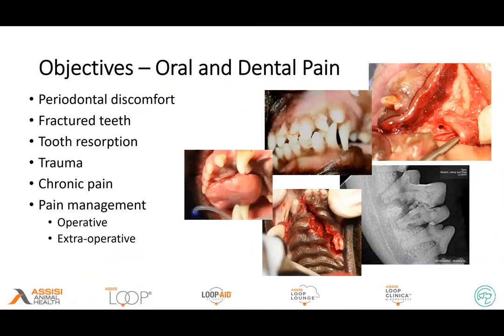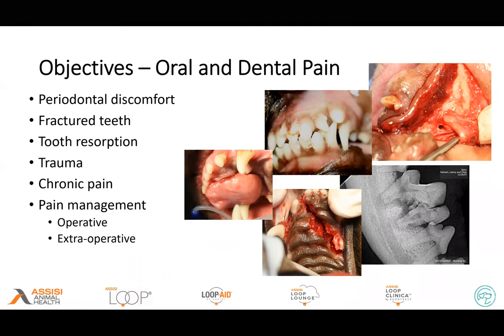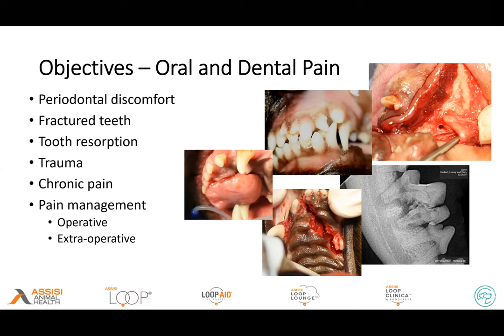As we look at oral and dental pain, there are certainly many areas where we can have pain and inflammation: periodontal disease, fractured teeth, tooth resorption — especially in cats — and certainly with any kind of trauma. We'll also talk about certain conditions that have chronic pain issues with the oral cavity, and what we can do both during our operative time periods and extra-operatively to help manage this pain and make our patients more comfortable.